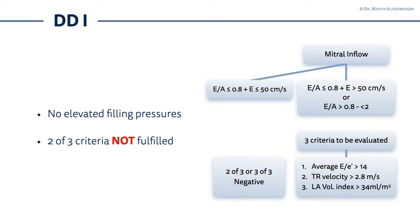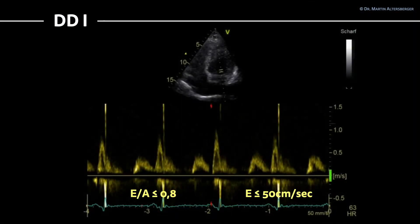Another case of diastolic dysfunction grade 1 in the mitral valve inflow would be an E to A at or below 0.8 plus an E at or below 50 centimeters per second. If you have this scenario it's automatically diastolic dysfunction grade 1 in patients with a sick left ventricle. Let's take a look at an example: we have an E to A ratio of at or below 0.8, and the maximal E velocity — the first of those two curves, the lower curve — is below 50 centimeters per second.